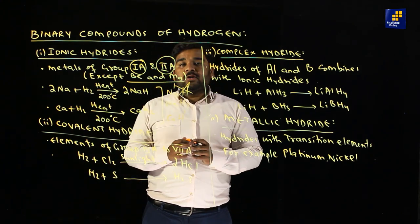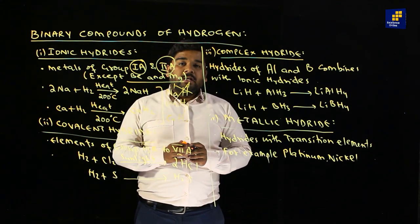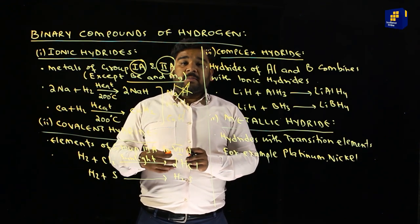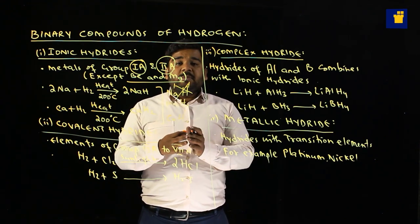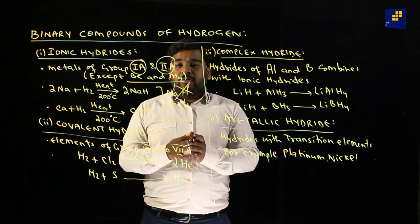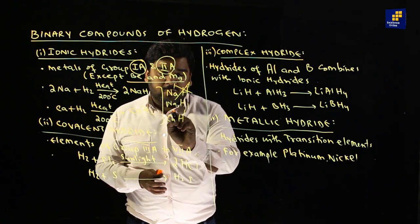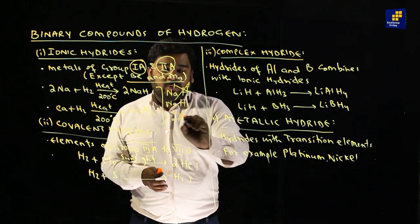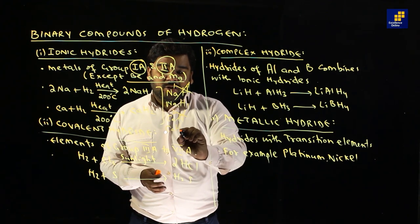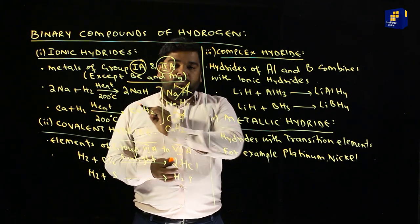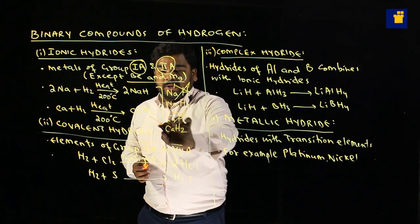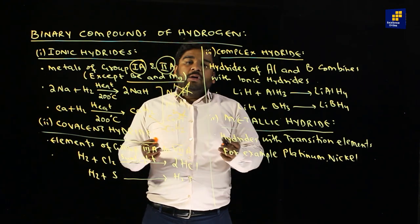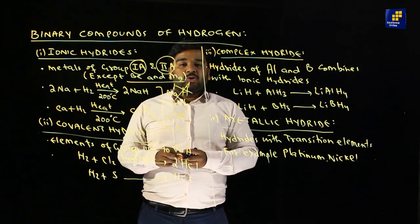For calcium, its atomic number is 20, with electron configuration 2, 8, 8, 2 — so it loses 2 electrons, giving a charge of +2. Hydrogen has a charge of 1, so the formula for calcium hydride is CaH2.